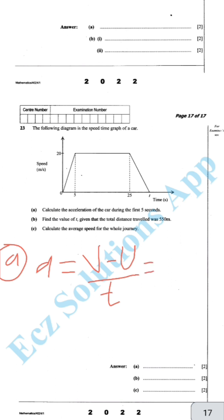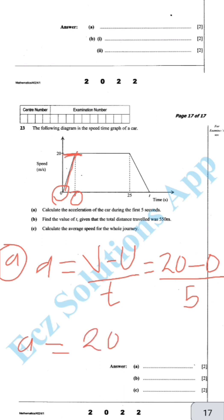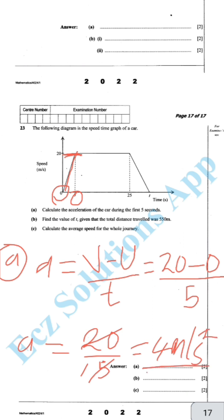From the graph, our final velocity is on the y-axis at 20, so 20 minus the initial velocity. The car is starting to accelerate from 0, so the initial velocity is 0, over time — they said the first 5 seconds, so time is 5. Acceleration equals 20 minus 0 over 5, which gives 20 over 5 equals 4. Since this is acceleration, the units are meters per second squared. So the answer is 4 meters per second squared.